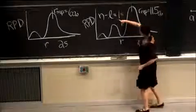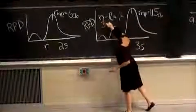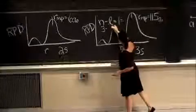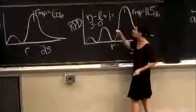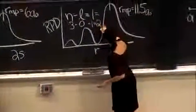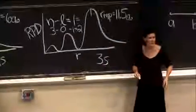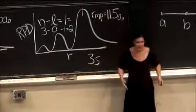Oh, I'm sorry. So it's n minus l minus 1. So here we have 3 minus l equals 0, because it's an s orbital, minus 1, so we have two radial nodes here. Yeah.